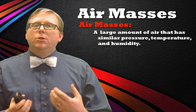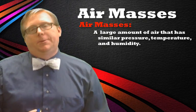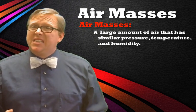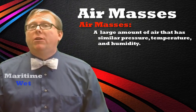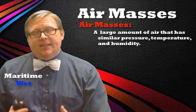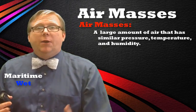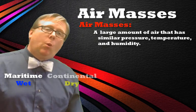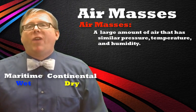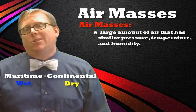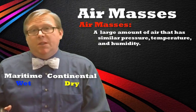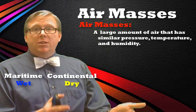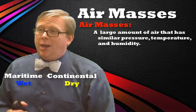The first thing is we can look at where that air mass was formed. Was it formed over the water? If so, it's going to be really wet and we call it a maritime air mass — wet, formed either over an ocean or a giant lake. If it's a dry air mass, we call that a continental air mass, because it's dry and formed over land. So we can have either a maritime air mass or a continental air mass.